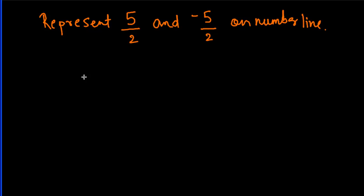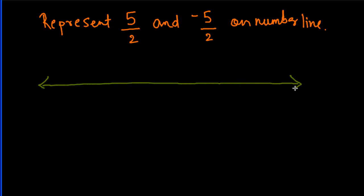First of all, let's draw the number line and mark our zero. You have to represent 5/2, which is basically equal to 2.5. If you have a graph paper, you can represent it precisely. But if you are drawing in your notebook without a graph, first you have to locate 5 and minus 5 on the number line.